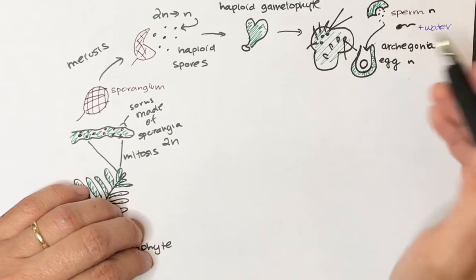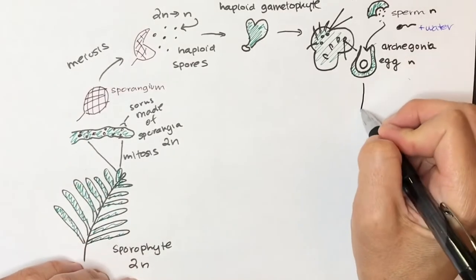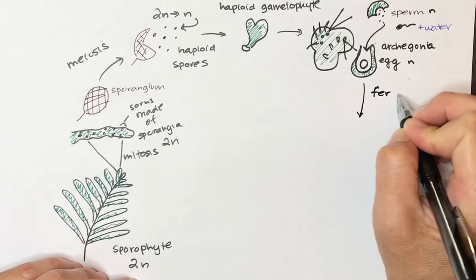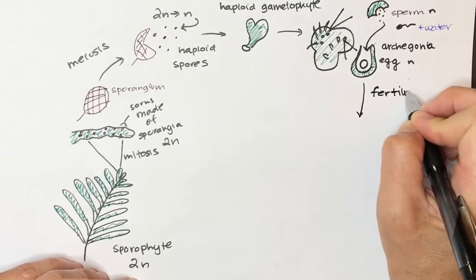So once the sperm meets the egg, we get fertilization. And when we have fertilization, the merging of two haploid cells, we get a diploid cell.